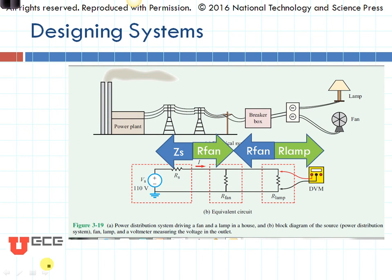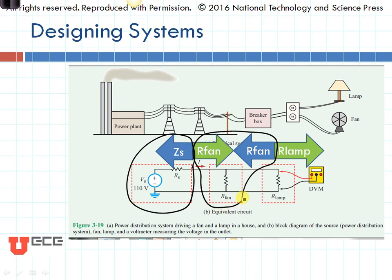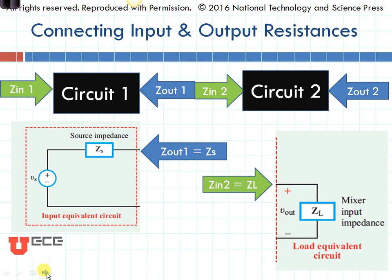Now let's go back to our circuit. Let's take a look again at this circuit and decide what our input and output resistances are. Just like in my previous case, the output resistance of the source block is simply Zs. Now let's look at this fan block right here. The input resistance right there would be our fan, and the output resistance would also be our fan. Now here's our last load right here — that's the lamp. And looking into the lamp, that gives me an input resistance of our lamp.